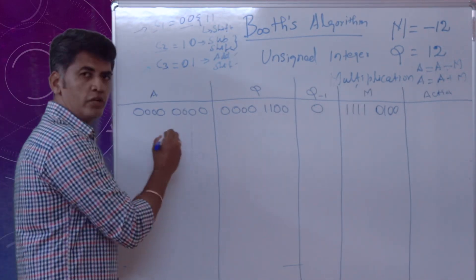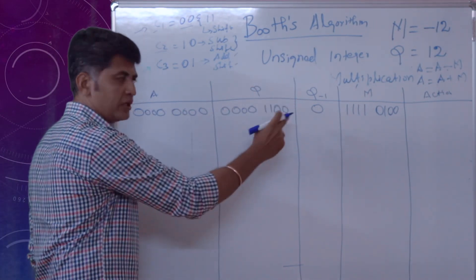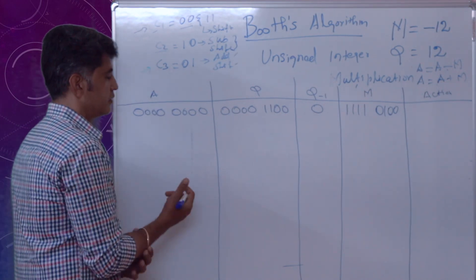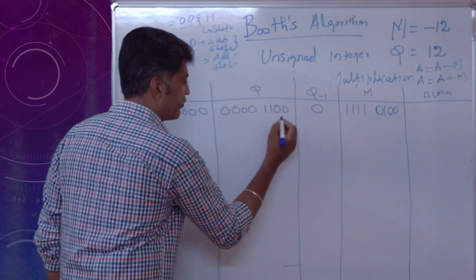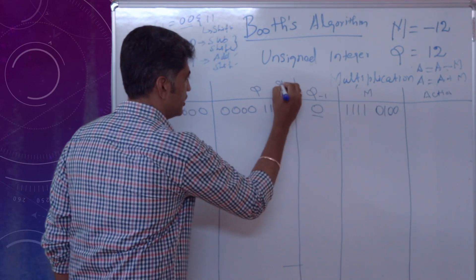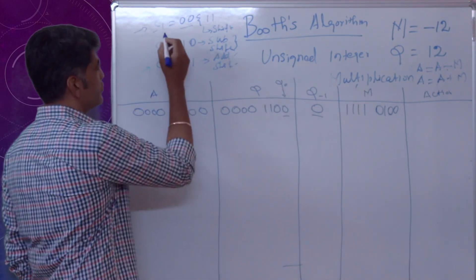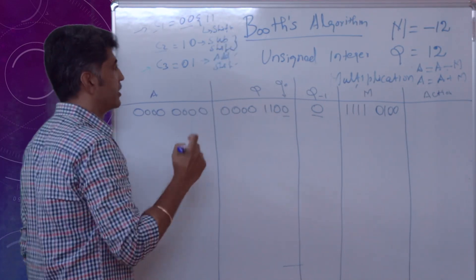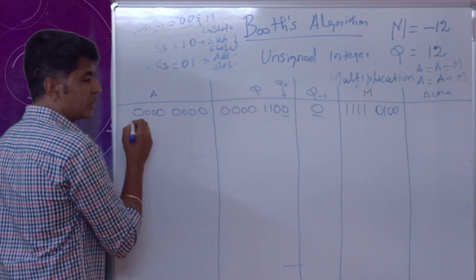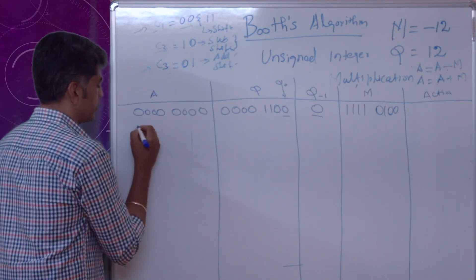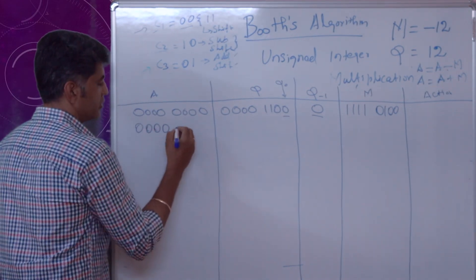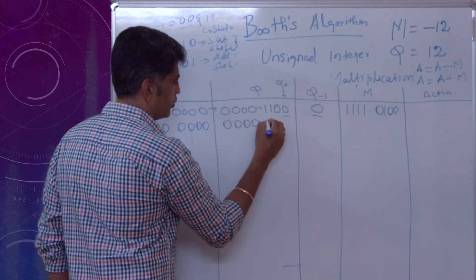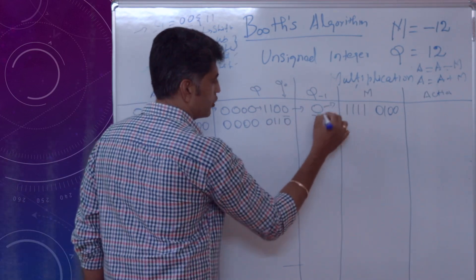These are the initial values: A, Q, Q(-1), M, and the action is null. Now checking Q0 and Q(-1): both are 0. So we go to condition 1 (0,0), which requires arithmetic shift only. For arithmetic shift, the leftmost bit must be sustained. Here it is 0, so 0 is sustained. After shifting: A = 0 0 0 0 0 0 0 0, Q = 0 0 0 0 0 1 1 0, Q(-1) = 0.